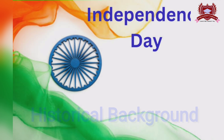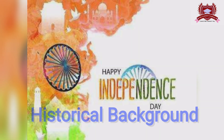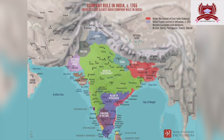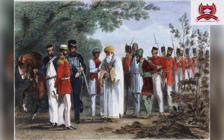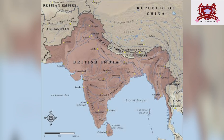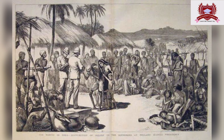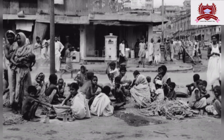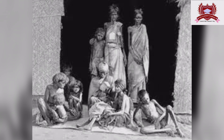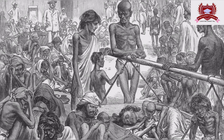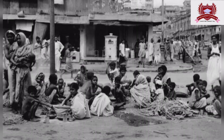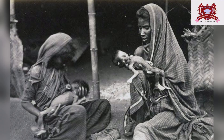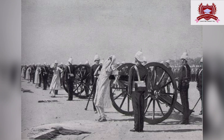To understand the significance of Independence Day, we must first take a look back at the history of British rule in India. The British East India Company began its rule in India in 1757 after their victory in the Battle of Plassey. Over the next hundred years, the company expanded its control over vast regions of the Indian subcontinent, leading to significant economic exploitation and political domination. The Indian economy was restructured to serve British interests, with traditional industries dismantled and a focus on exporting raw materials to Britain. This led to widespread poverty and famines in India. In addition to economic exploitation, social and cultural changes were imposed, causing resentment among Indians.